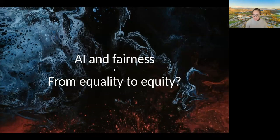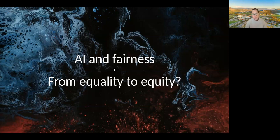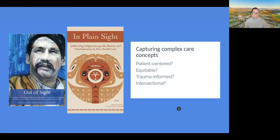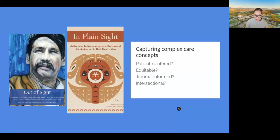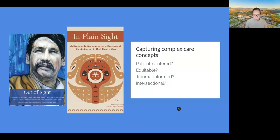Moving from equality to equity: many models now trying to use social determinants of health to predict things still have limited views and don't really leverage the clinical expertise of nursing to think about equity in a broader sense. Algorithms are being built with sociodemographics as what counts as social determinants. But if we're really talking about complex care concepts — patient-centeredness, equitable care, trauma-informed care, intersectional care — is it really going to be possible to build AI tools when we don't have the data to support what those look like? I think there's a lot of progress that nursing can lead the way on if we are involved in the conversation from the start.